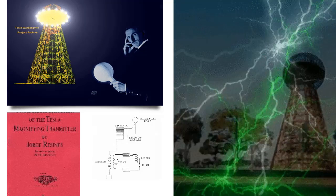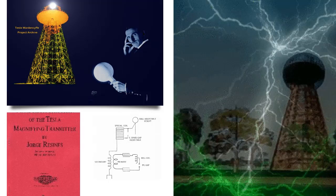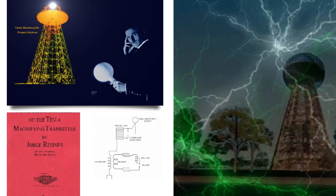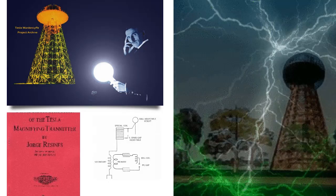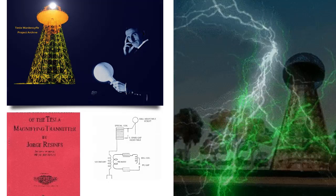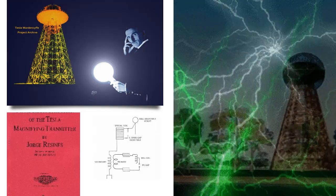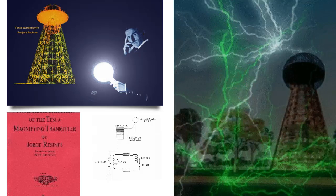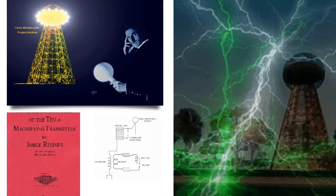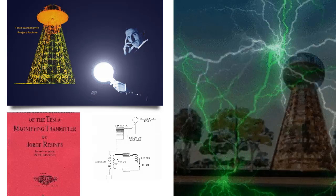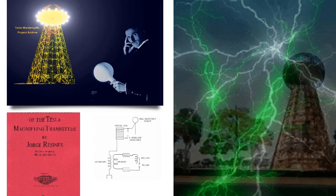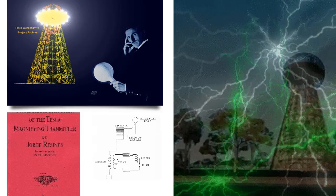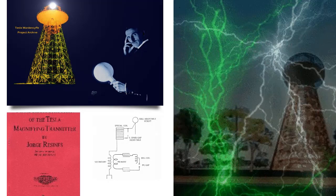Nikola Tesla was working on a device he called the Magnifying Transmitter. The goal of the device was to tap into the earth's natural energy field, known as the ether, and use it to power electrical devices. The problem was that no one knew how to build such a device. Tesla eventually figured out how to construct a working model of his magnifying transmitter. The key was using an electronic circuit to set the tension of the ether.